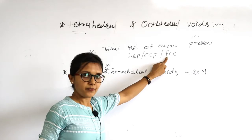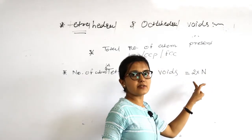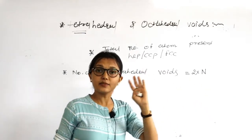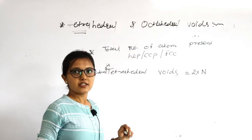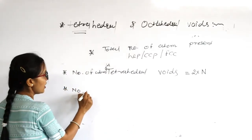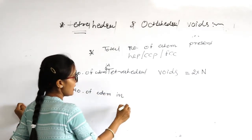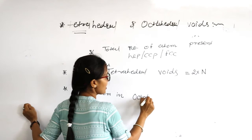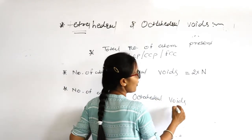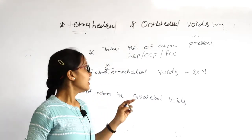Here n is the number of atoms present in HCP, CCP, and FCC. For example, in FCC the total number of atoms is four, so tetrahedral voids = 2 × 4 = 8. So for FCC, the number of tetrahedral voids is equal to eight. The number of octahedral voids for CCP and HCP is equal to n.